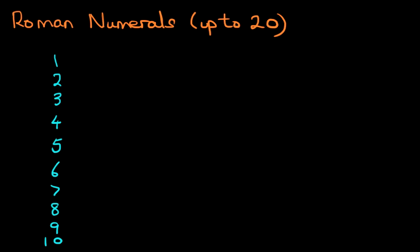Now we'll write down the Roman numerals. Remember 1 is written as simply a capital I. 2 has got 2 capital I's: 1, 2. 3 has got 3 capital I's: 1, 2, 3.